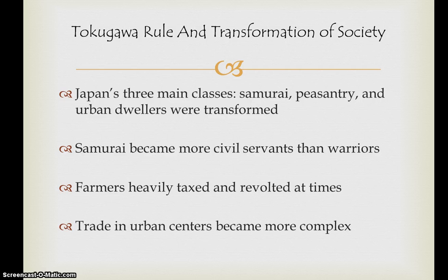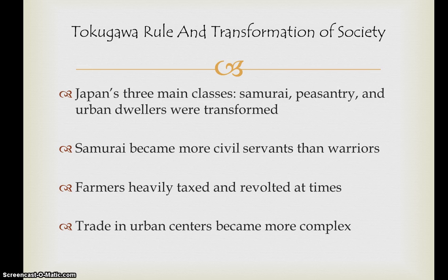For Tokugawa rule and transformation of society, Japan has three main classes: samurai, the peasantry, and urban dwellers, all transformed in this period. Samurai became more civil servants than warriors. Before, samurai were tough because they were always fighting each other, making them well-trained fighters. But once stability was created and they stopped fighting amongst themselves, they took on different roles — some getting soft or indulgent, becoming almost like bureaucrats. Farmers were heavily taxed and seen as conservative and passive.